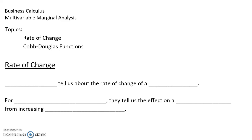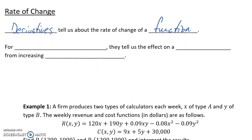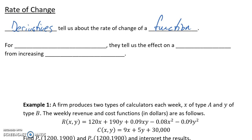We've already talked about the idea of marginal analysis earlier in the semester, but we talked about that with single variable functions. Now we want to expand on it to include multivariable functions, talk about the results we can calculate, and how we can interpret those. As a reminder, derivatives always tell us about the rate of change of a function. Specifically with marginal analysis, we looked at how evaluating the derivative at a certain value tells us how much the function would change if our x value were to increase by one unit.